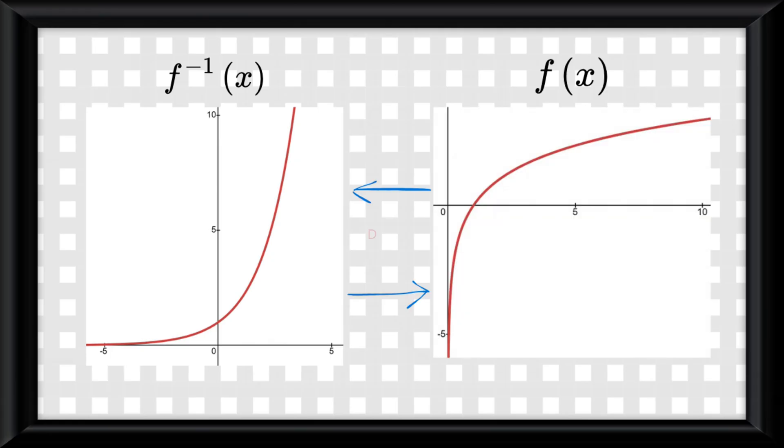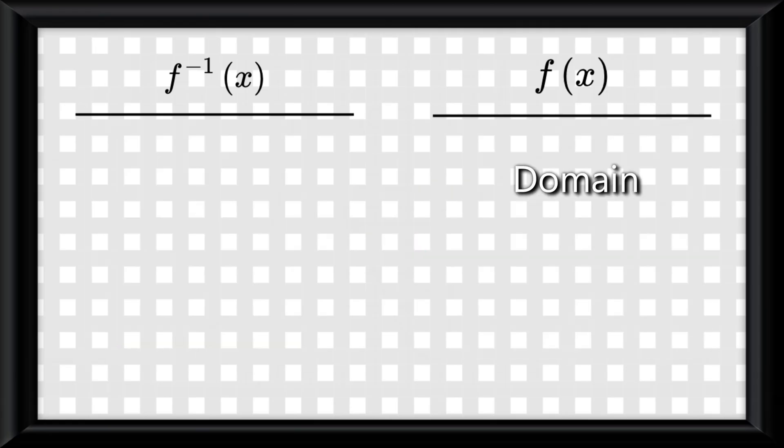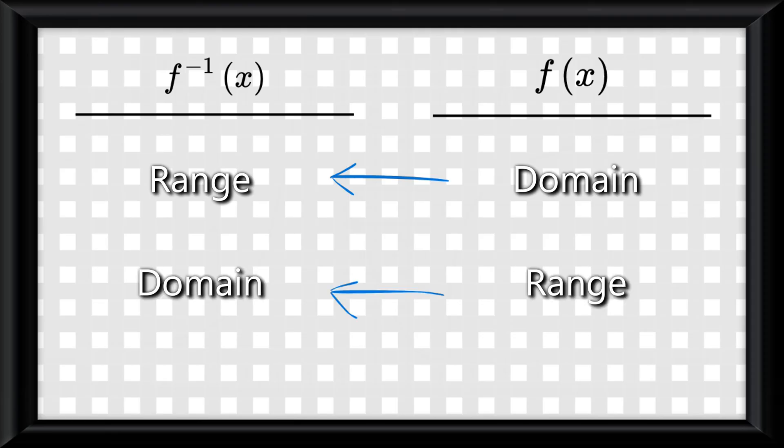Last thing about inverse functions. The inverse function and the original function swap domain and ranges, so the original's domain becomes the inverse's range, and the original's range becomes the inverse's domain.